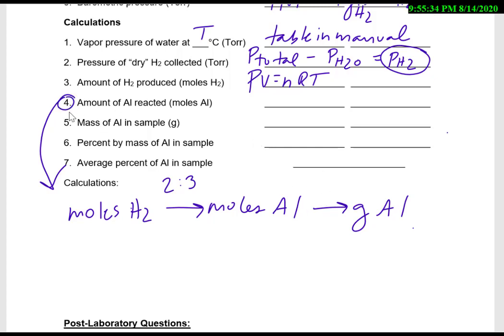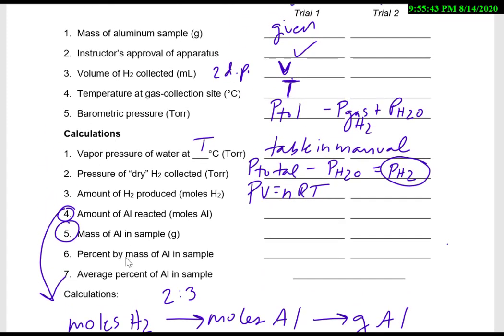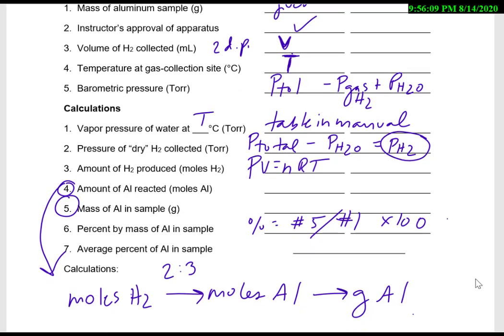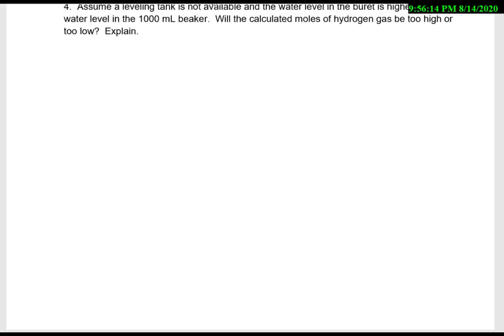And then your percent by mass for your aluminum, you'll be taking your mass of aluminum, and then your sample, so number five here, that's your amount of aluminum over the soda can, which was way up here in number one, times 100. And that'll tell you how much of the can was actually aluminum. So you'll do that for both trials, then you'll complete the post-lab questions here as well.